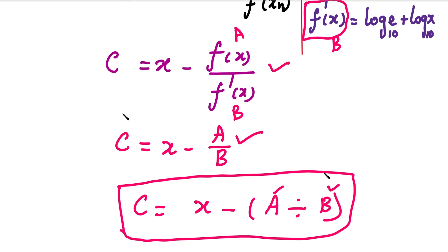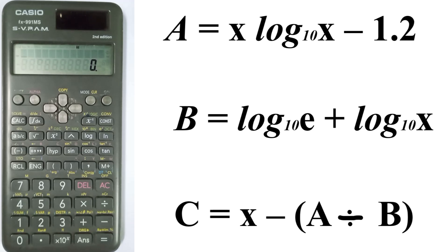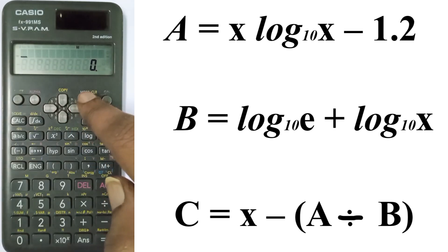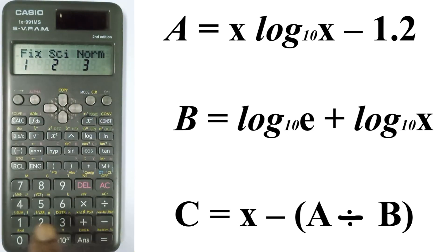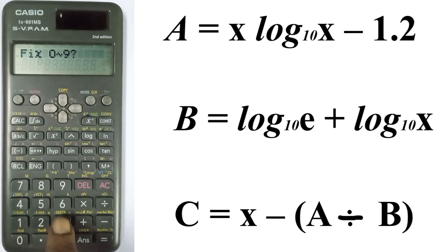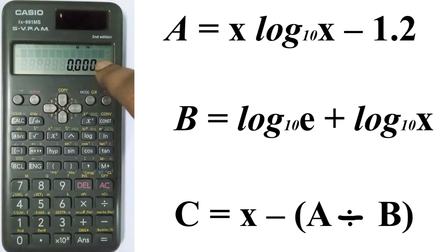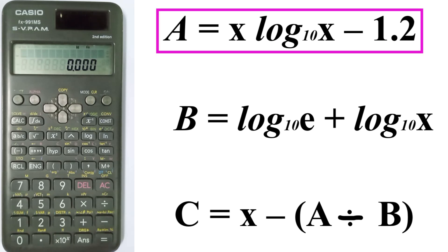In this question, the root is to 3 decimal places. First, fix 3 decimal places: press the mode button 5 times, then press fix, then enter 1 and enter 3 digits. Now we store the 3 equations. The first equation is A = x·log(x) base 10 - 1.2.